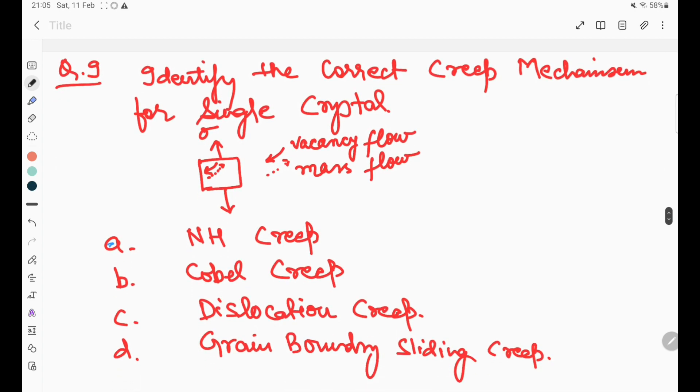Question number nine: identify the correct creep mechanism for a single crystal, where a block has tensile force applied, with vacancy flow and the dotted line showing mass flow. The right answer is option A: Nabarro-Herring creep.